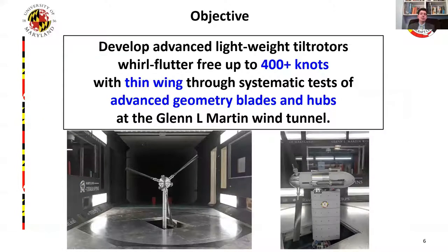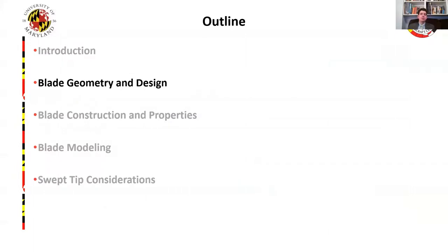The objective of this work is part of a larger program at UMD to develop advanced, lightweight tilt rotors that are Whirl Flutter-free up to over 400 knots, with a thin wing and advanced geometry blades and hubs, through testing at the wind tunnel. That covers the introduction. Next we'll go over the blade geometry and design, then construction and properties of the built blade, the finite element modeling of the blade, and finally special considerations for the swept tip blade.